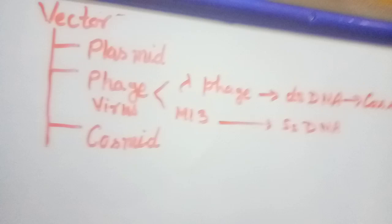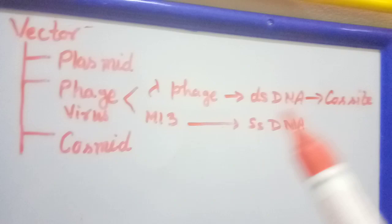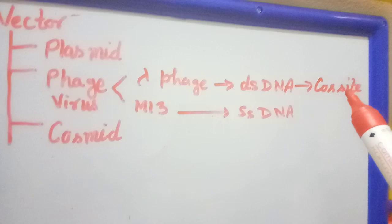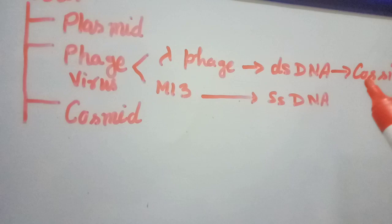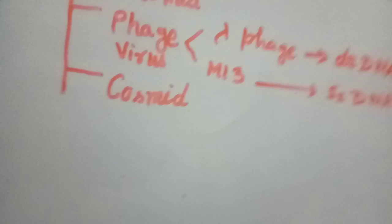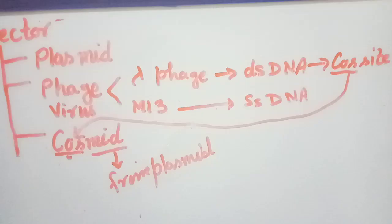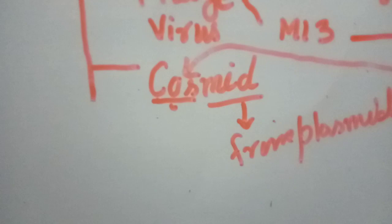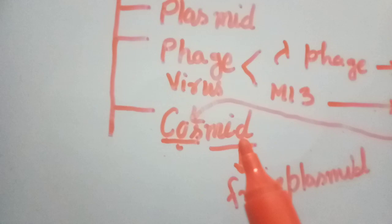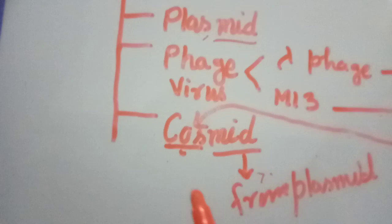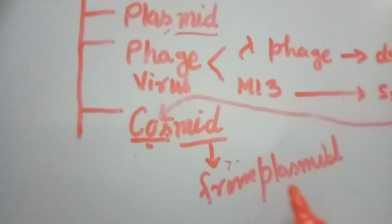Based on the plasmid and the phage virus cos site, we are combining this plasmid and cos site to form a cosmid. This cos site is coming from the lambda phage while the mid portion is coming from the plasmid region, so this combined cosmid comes from the plasmid.